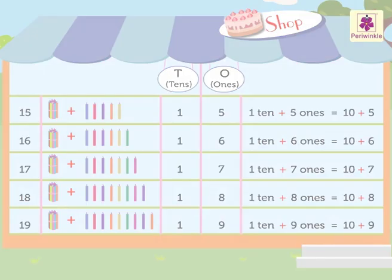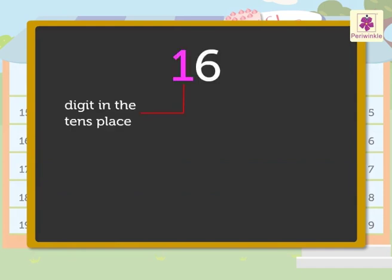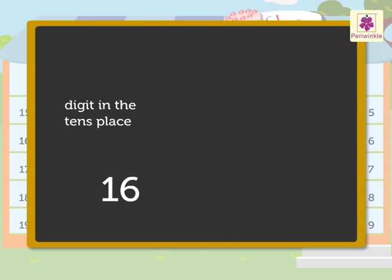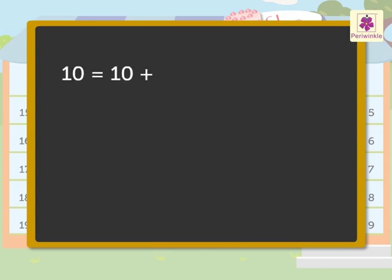Now let's look at the numbers again. In number 16, one is the digit in the tens place and six is the digit in the ones place. Number 16 represents one ten and six ones; hence, 16 is equal to ten plus six. Similarly: ten is equal to ten plus zero, eleven is equal to ten plus one, and twelve is equal to ten plus two.